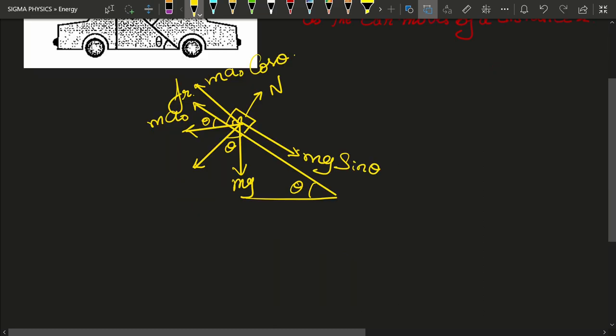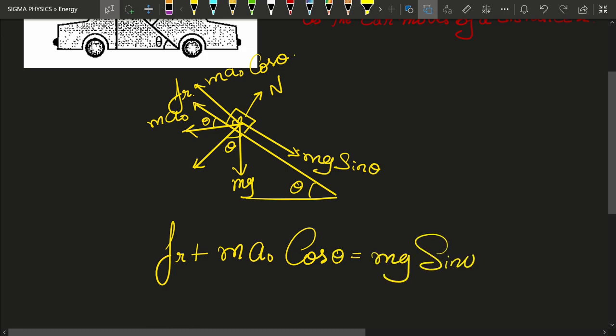And hence the equation of motion of that block of mass m will look something like this: friction plus m a0 cos theta is equal to m g sin theta.